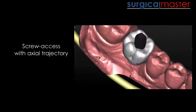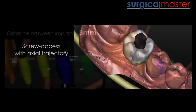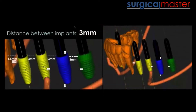I like to plan implants in a screw axis trajectory, so you have the option to make the restoration retrievable — all the advantages of the screw axis implant restoration. When it comes to multiple implants, I would program the software to warn me if I'm getting closer than three millimeters. So: 1.5 millimeters to an adjacent tooth and three millimeters between implants. These measurements can be so accurate in the system — it's just humanly not possible to achieve by hand.